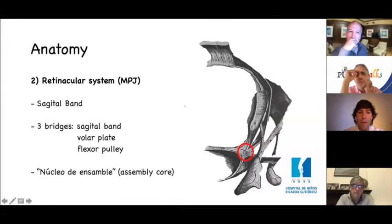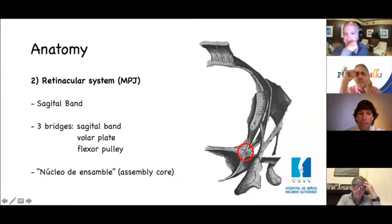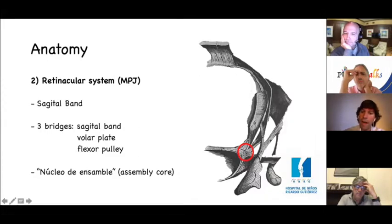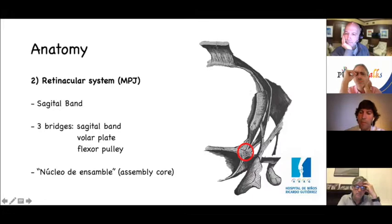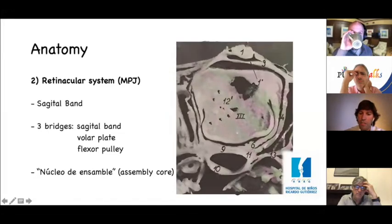At the level of the MP joint, we have three bridges of the retinacular system: the sagittal band, the palmar plate, and the flexor pulley. Dr. Sancolis described a 'nucleo de ensemble' or assembly cord — a very dense collagen structure where many structures meet: the sagittal band, the palmar plate, the A1 pulley, the intermetacarpal ligament, and the interosseous hood. This is also part of the glenoid fascicle of the metacarpal phalangeal ligament.